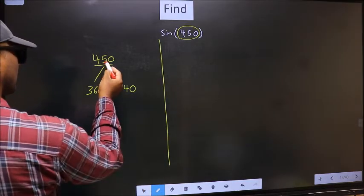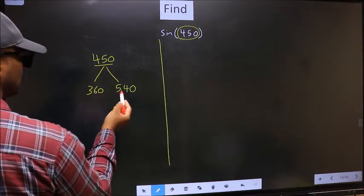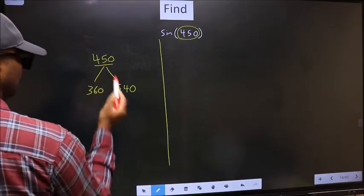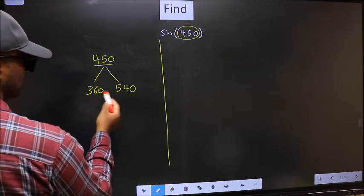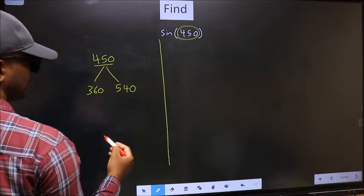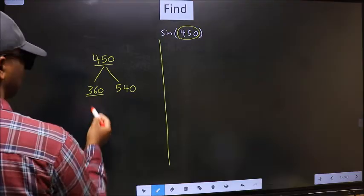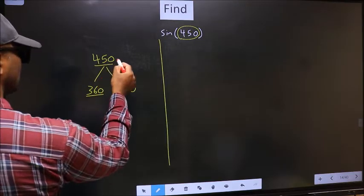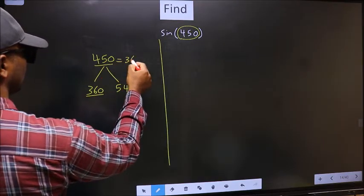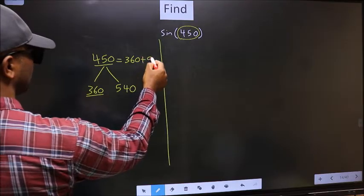Next, now 450 is close to which number? This is equally close to both the numbers. So you select any one number. Let us say I select 360. So now 450 should be written as 360 plus 90.